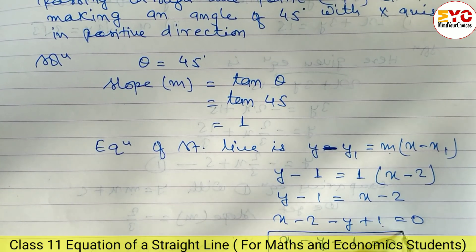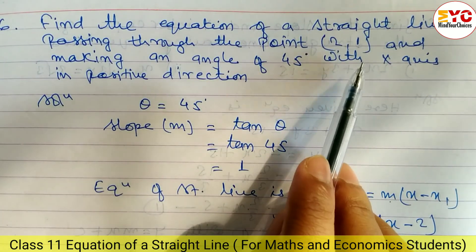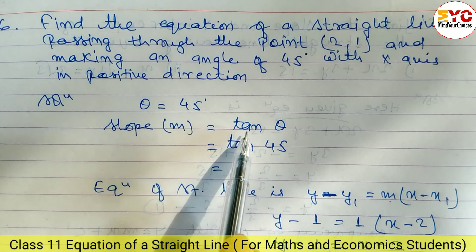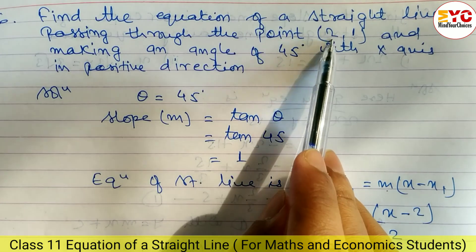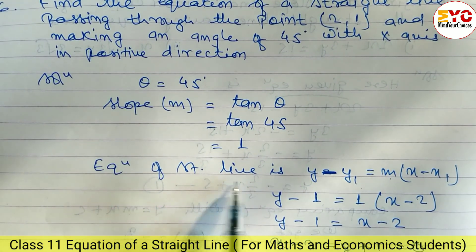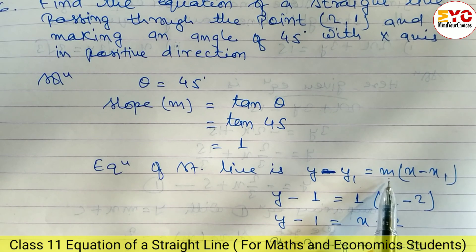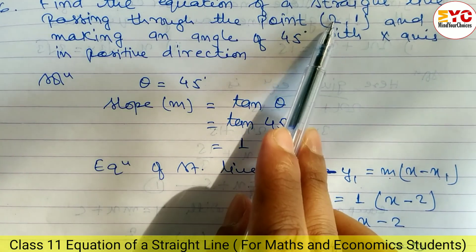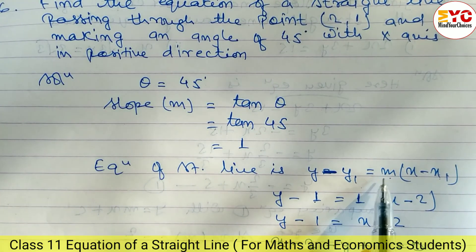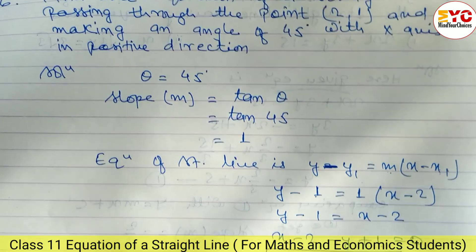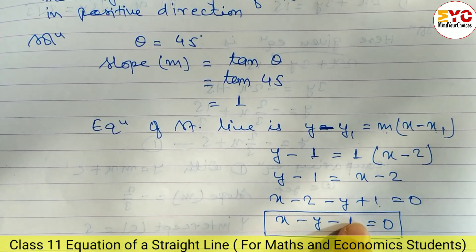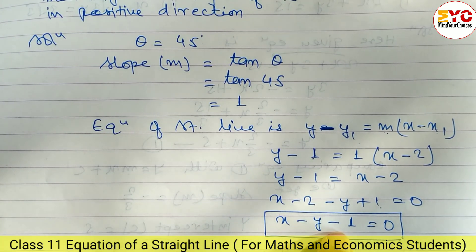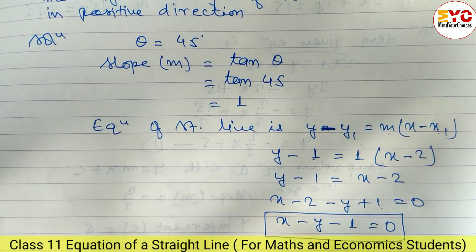So x - y - 1 = 0 is the required equation of the straight line. We used the one-point formula with x1 = 2, y1 = 1, and m = 1. We can also write it as x - y = 1.